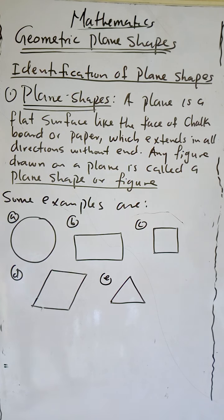Geometry what? Plane shapes. And the first aspect of this geometric plane shape is identification of plane shapes. Identification of what? Plane shapes.